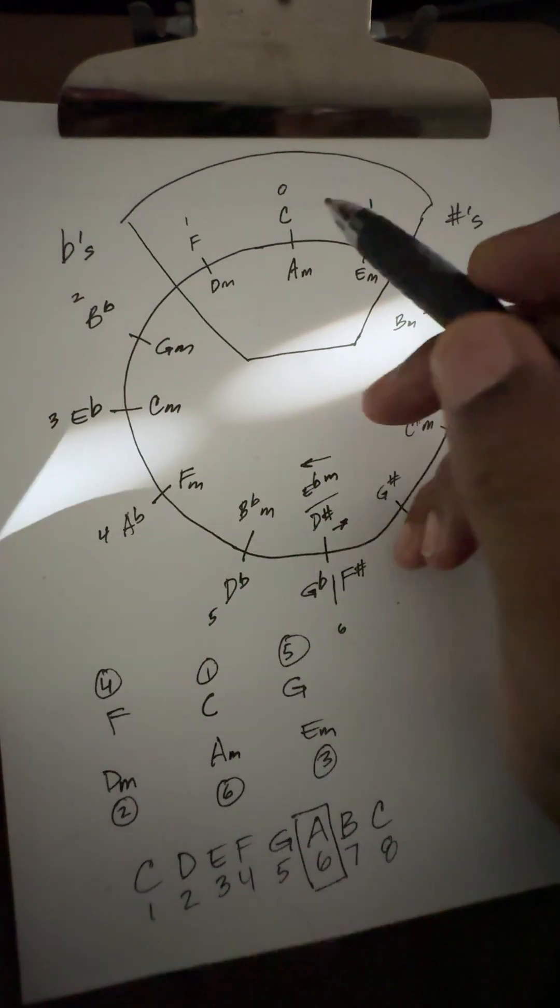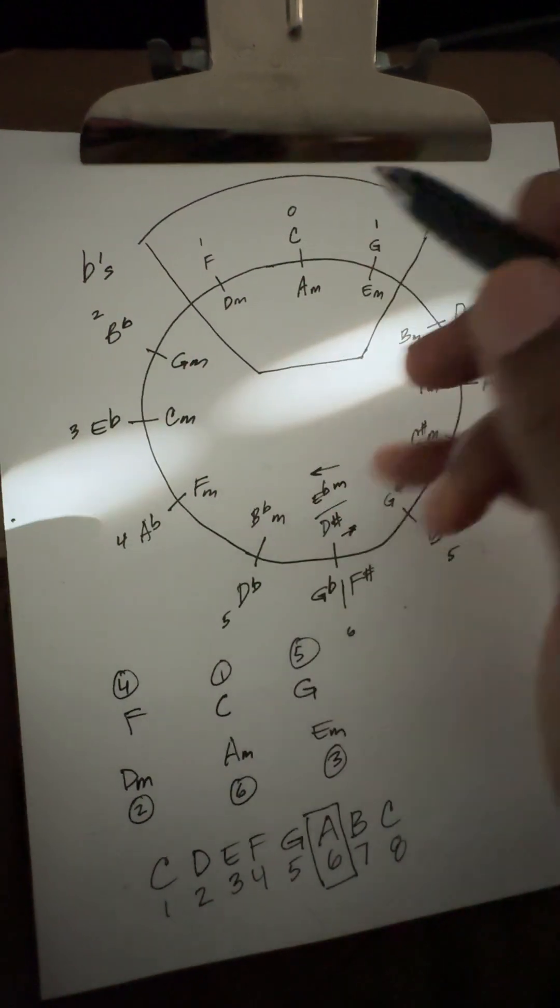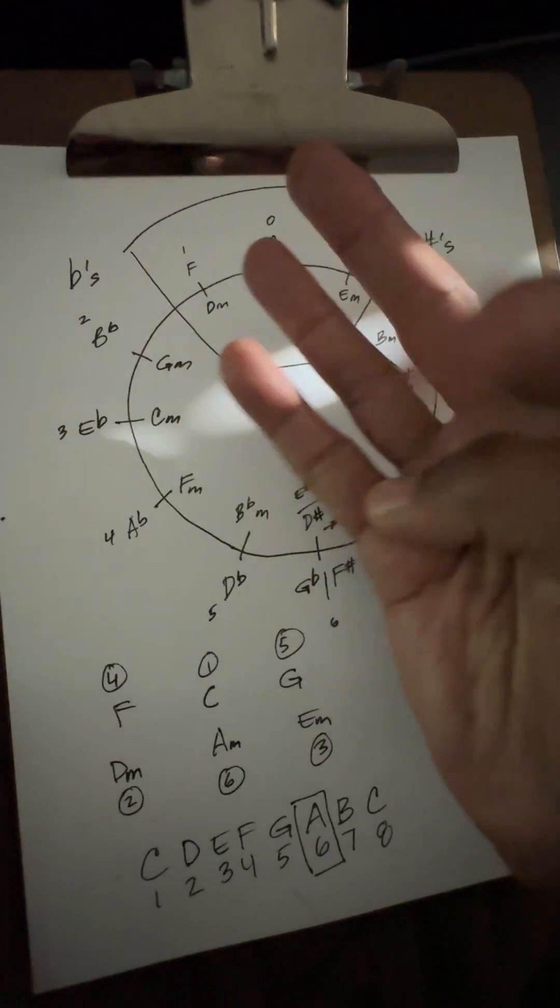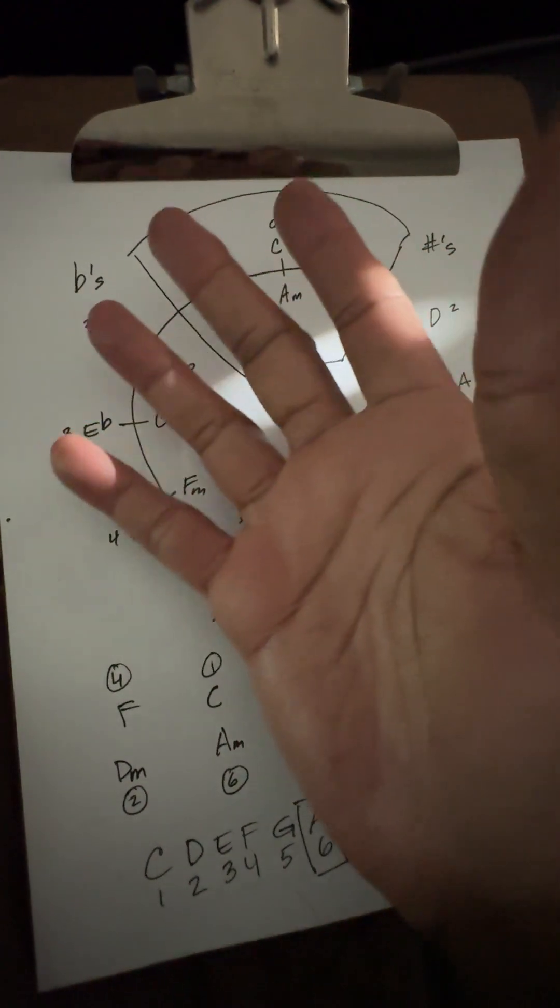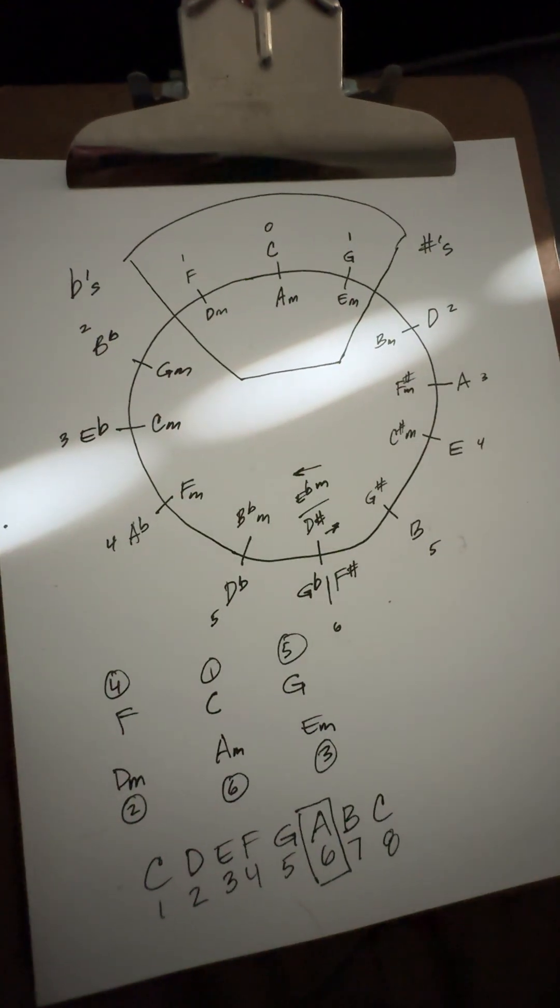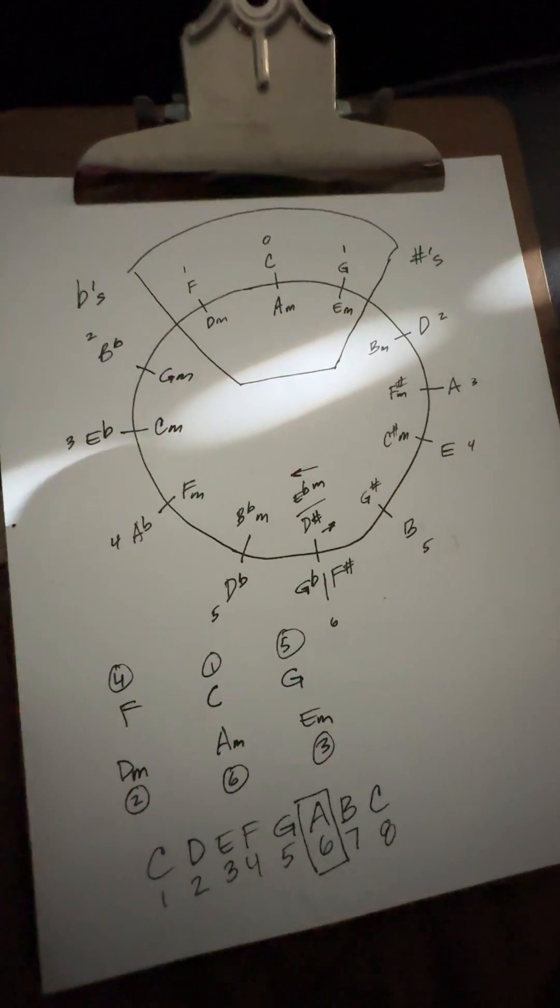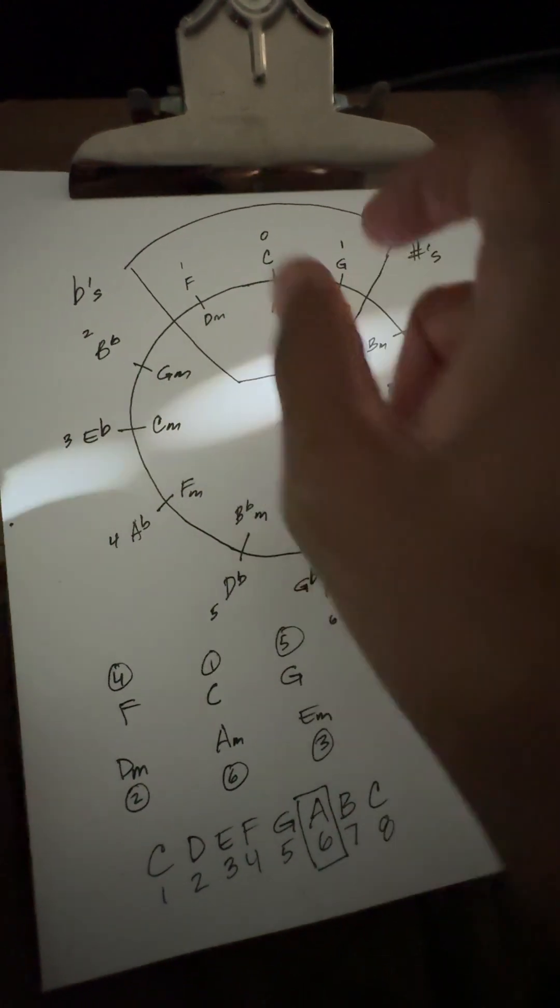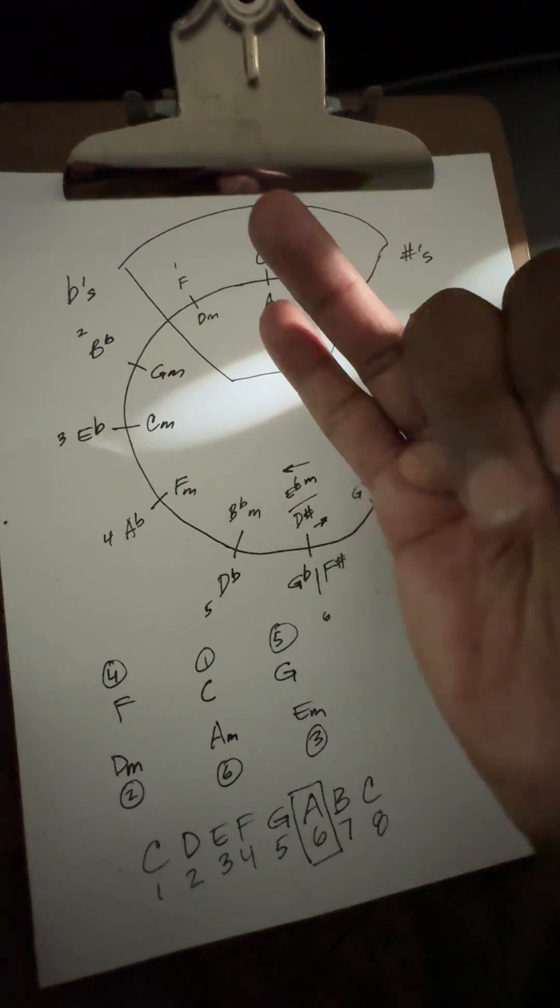So what I do is I can start off with just C and just work the outer notes all the way around. All you got to do is count from 5, from C to G. C, D, E, F, G. I don't know what happened there. But anyway, the G is a fifth away from C.